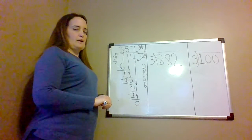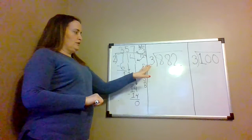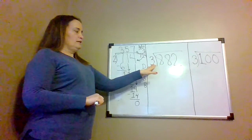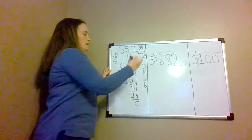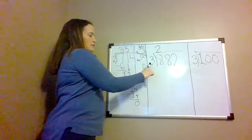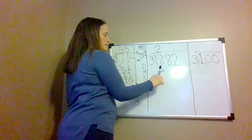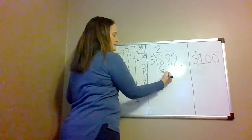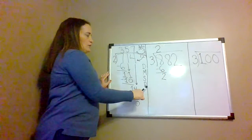The next problem is 882 divided by 3. We start by dividing the hundreds place by 3. 8 divided by 3 equals 2. Then we multiply: 3 times 2 is 6. Then we subtract: 8 take away 6 equals 2. Then we bring down.